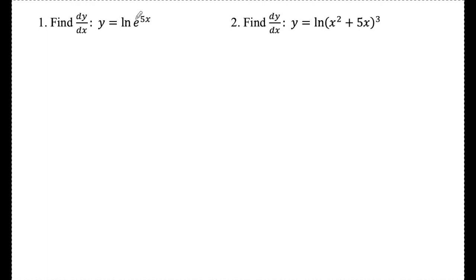Number one, find dy/dx: y = ln(e^5x). Since ln(e) = 1, this cancels out and y can be written as just 5x. So dy/dx is just 5. Easy peasy.